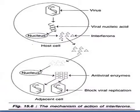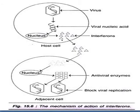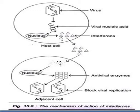Let's discuss about the mechanism of action of interferon. As you can see in this diagram, interferons are produced by a mammalian cell when it is infected by a virus. These interferons, secreted by host cells, bind to adjacent cells where they stimulate the cellular DNA to produce a series of antiviral enzymes. The secreted interferon by host cells enters into the second adjacent cell, which produces antiviral enzymes.